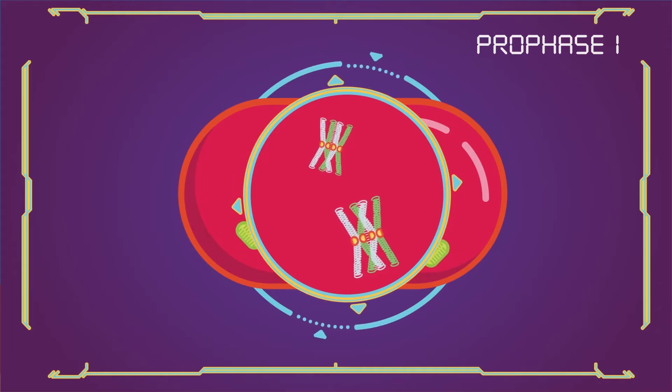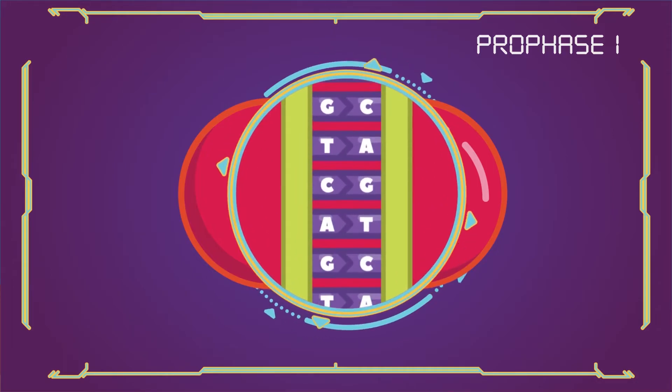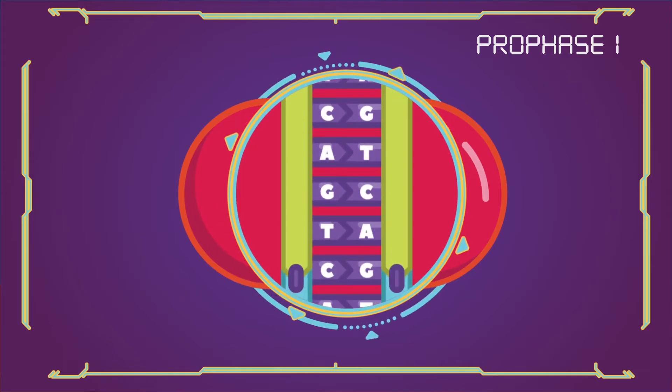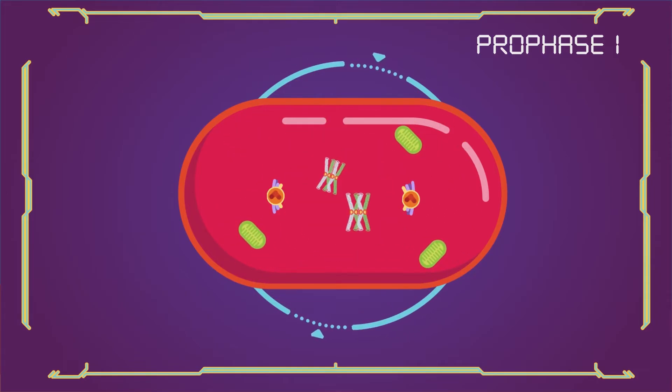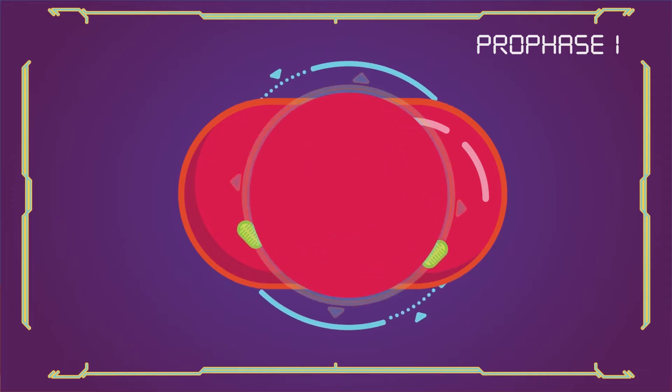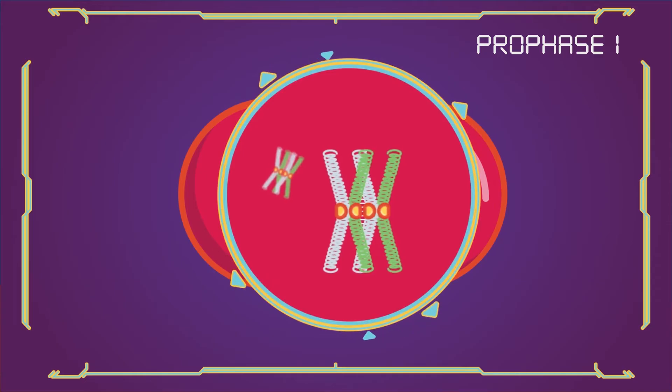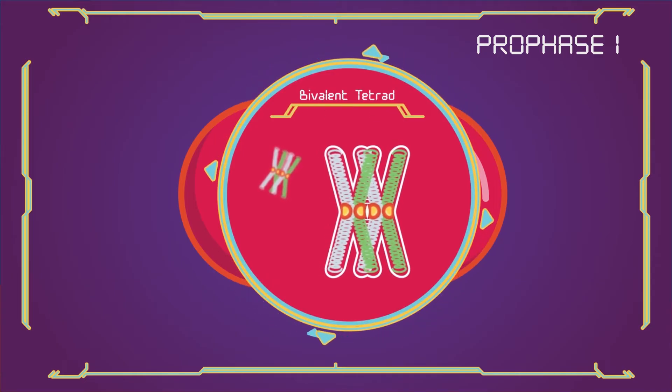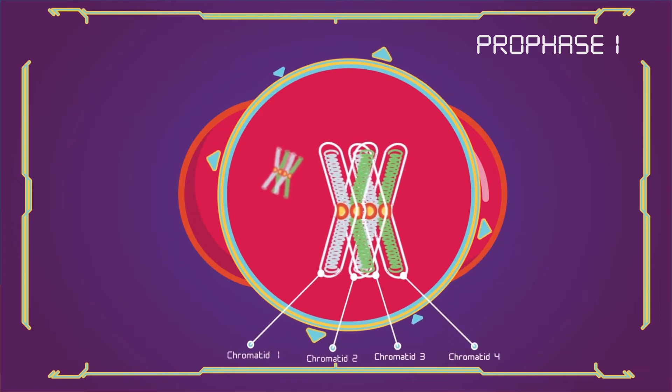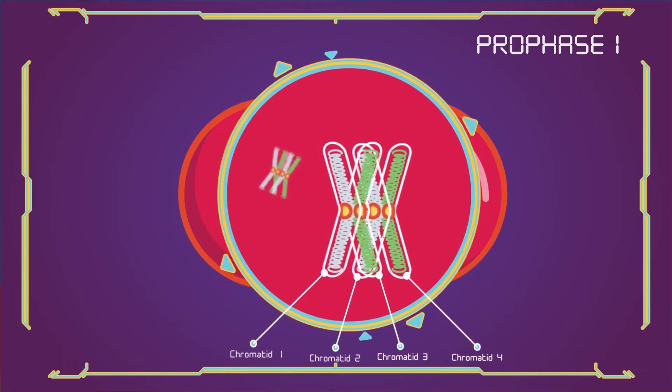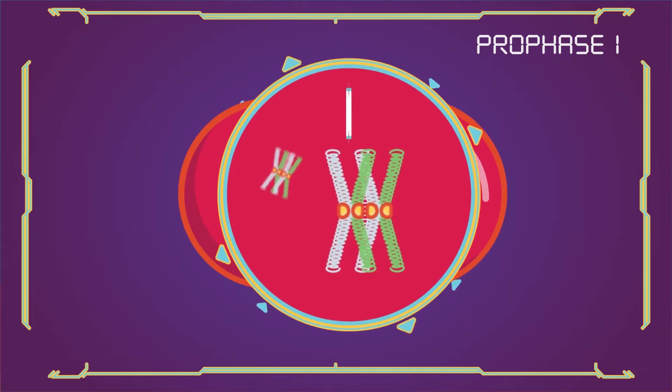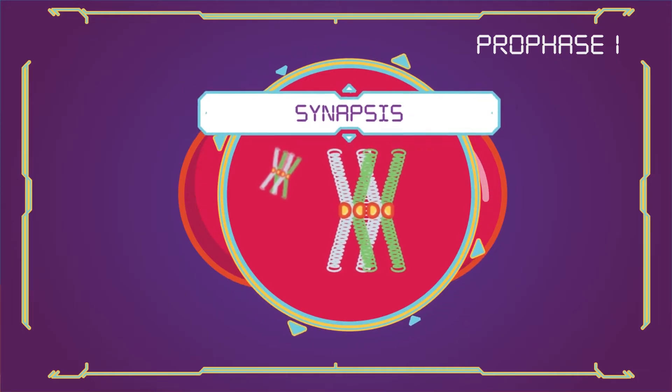Homologous recombination. The new combinations of DNA created during crossover are a significant source of genetic variation and result in new combinations of alleles, which may be beneficial. The paired and replicated chromosomes are called bivalents or tetrads, which have two chromosomes and four chromatids, with one chromosome coming from each parent.